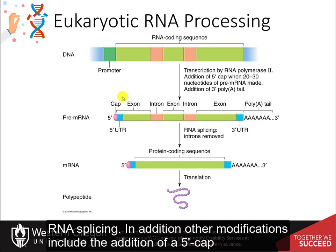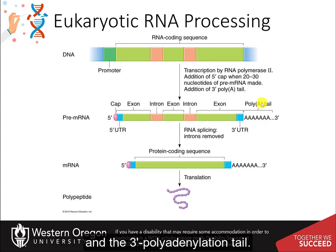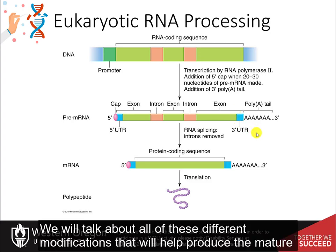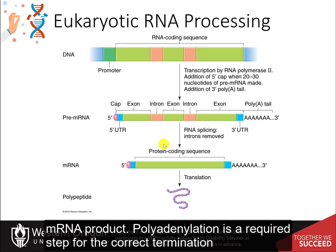In addition, other modifications include the addition of a 5' cap and the 3' polyadenylation tail. We will talk about all of these different modifications that will help produce the mature messenger RNA product.